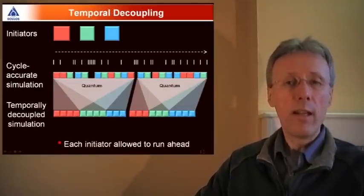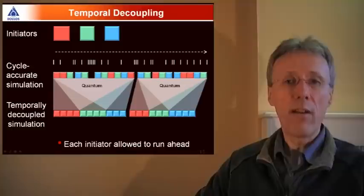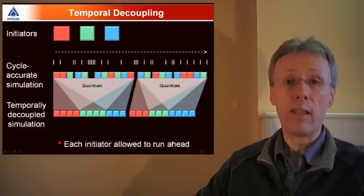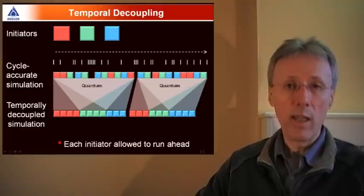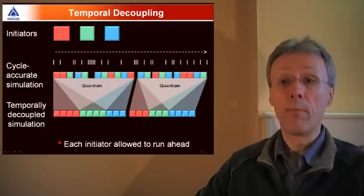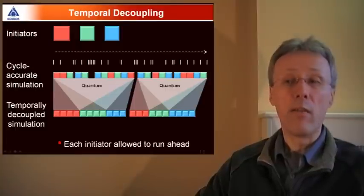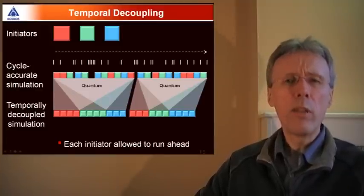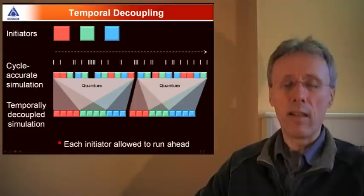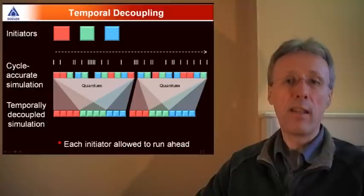With temporal decoupling, once an initiator starts running, the initiator is allowed to carry on running and actually run as far ahead as it likes in terms of the time that's being simulated within the target system. And the objective there is to minimise the amount of context switching in the model and therefore maximise simulation speed. So a temporally decoupled initiator will execute functionality on and on into the future running ahead of the simulation time clock, and it's limited only by a quantity known as the quantum. So the quantum represents the level of granularity, timing granularity in the temporally decoupled simulation.